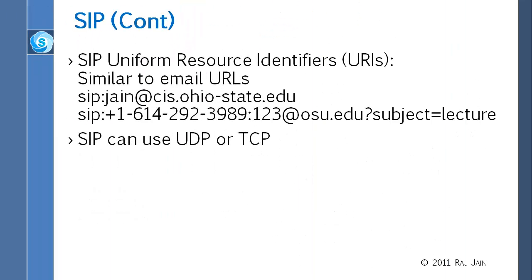SIP is very similar to HTTP. It has URLs — for example, a SIP URL includes a phone number and the organization, and a subject field, similar to mailto. This is not a real AT&T phone line; it is a phone line that goes to osu.edu. There, a SIP server is listening on port 5060 and knows what to do with the number. On your phone it might display as 614-292-3989, but this is all a SIP address.